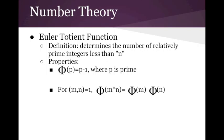In number theory, he is most known for his Euler totient function, which determines the number of relatively prime integers less than n. For example, the phi of 3 equals 2, because 1 and 2 are both less than 3 and relatively prime with 3.